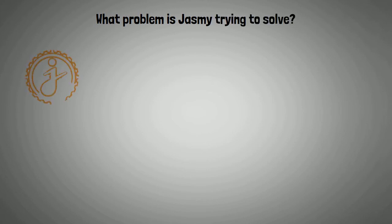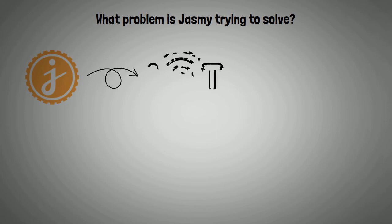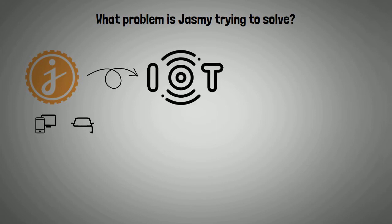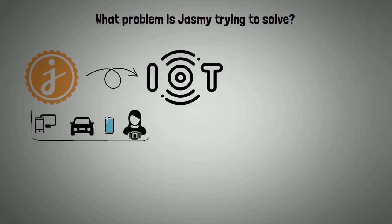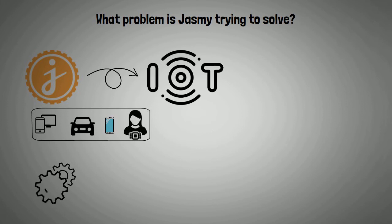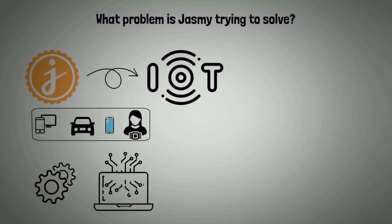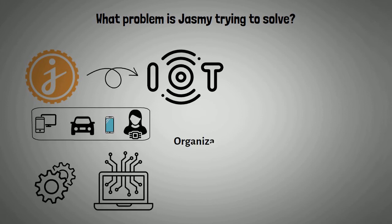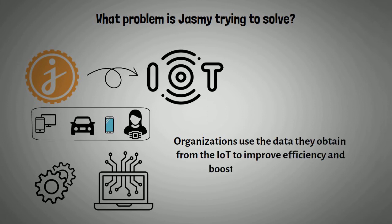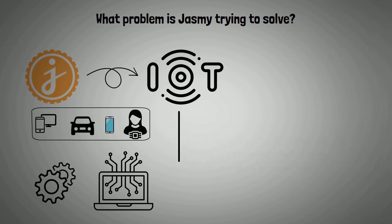First off, what problem is Jasmine trying to solve? Jasmine is designed specifically for the Internet of Things, or IoT. The IoT as a system includes computers, cars, phones, and even implantable biochip transponders. It comprises both mechanical and digital items which feature unique identifiers and are capable of transmitting data elsewhere. Organizations use the data they obtain from the IoT to improve efficiency and boost their bottom line.